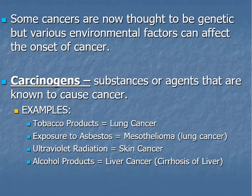Some cancers are now thought to be genetic, and there are environmental factors that can affect the onset of cancer. If you know anything about breast cancer research over the last 10 years, they have discovered a couple of genes called BRCA1 and BRCA2 that are precursors to having breast cancer. If you do one of those DNA test kits to find out your ancestry, they can actually tell you if you have these genes, and if you do, you can take further steps.